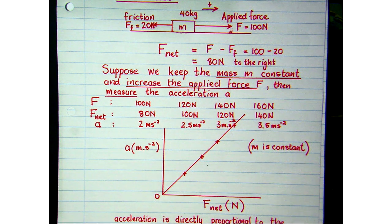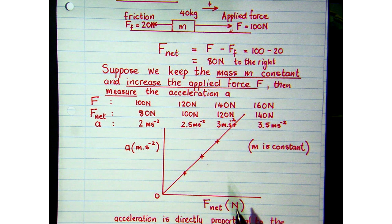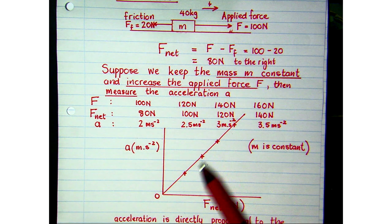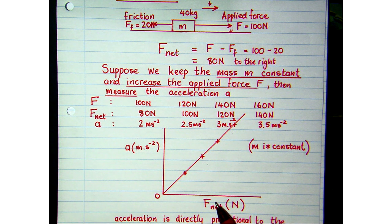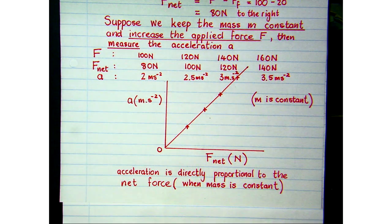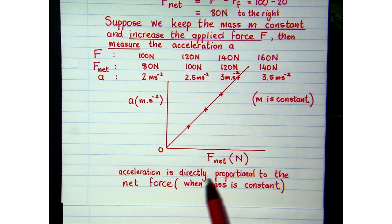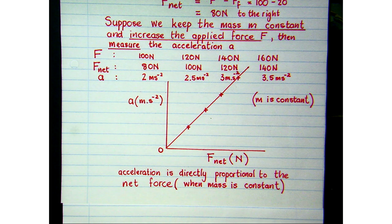A straight line through the origin is evidence that acceleration is directly proportional to the net force, since if we get a straight line through the origin then y is directly proportional to x. With the mass kept constant, our conclusion is that the acceleration of the object is directly proportional to the net force — the same result you would have obtained in your Pivot practical.